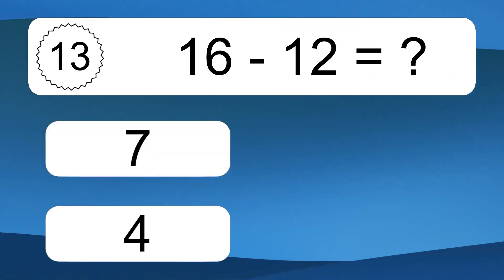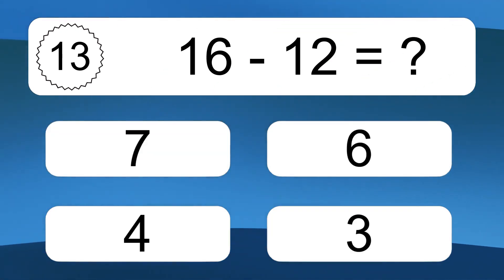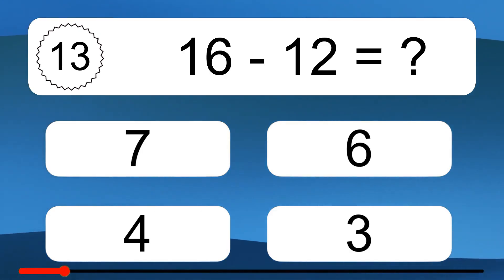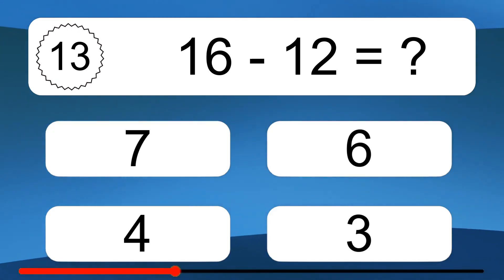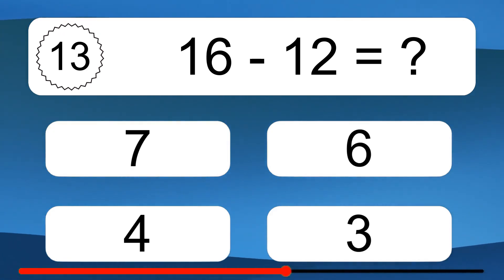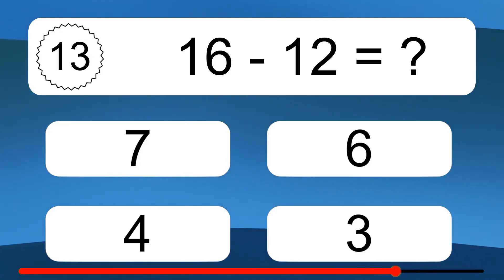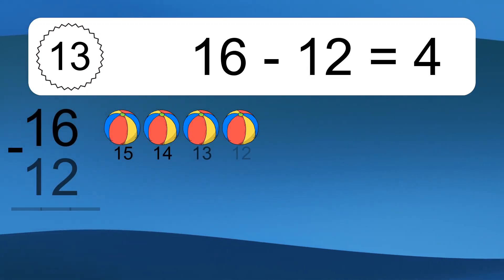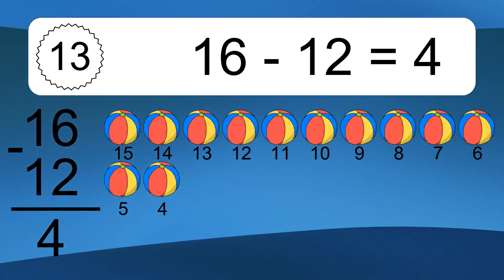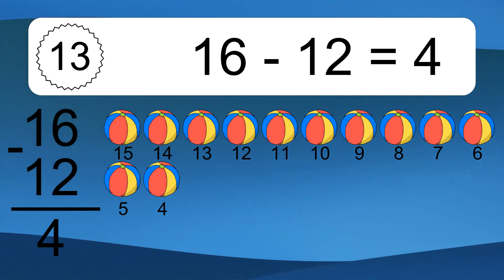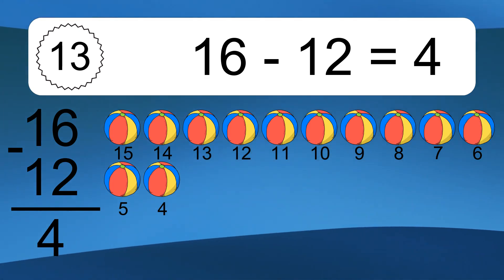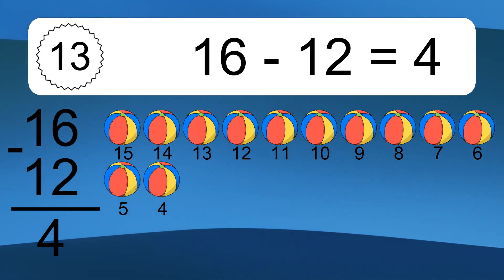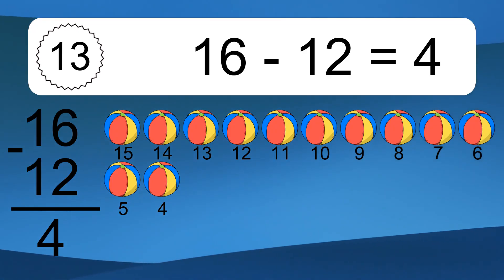16 minus 12 equals what? 16 minus 12 equals 4. Let's count it: 15, 14, 13, 12, 11, 10, 9, 8, 7, 6, 5, 4.